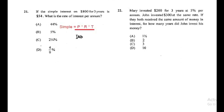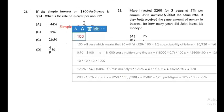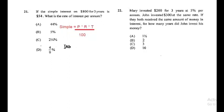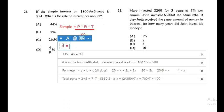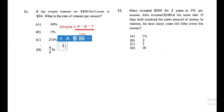So our simple interest in this question is $54. That equals the principal of $800, multiplied by the rate which we're trying to find, multiplied by the time of three years, all divided by 100.